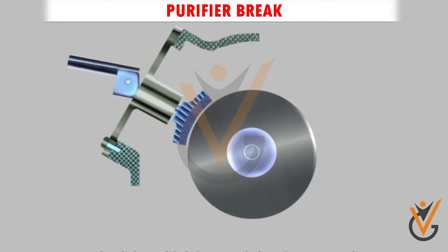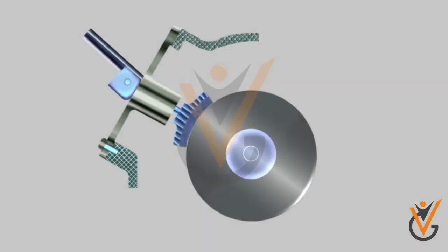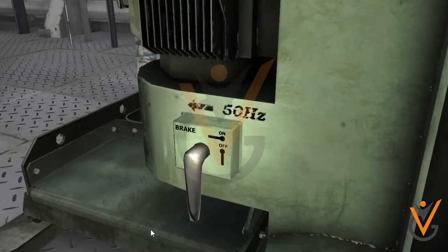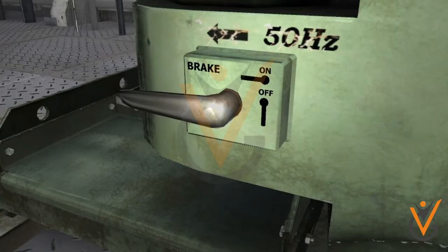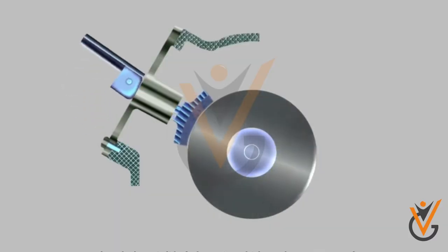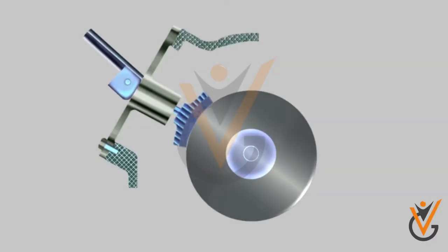The purifier brake, which is provided near the gear at the bottom of the purifier, must be in the release position. If the brake is not released, the purifier will not reach its required speed and the motor current will increase. Moreover, this will also cause wear down of brakes.